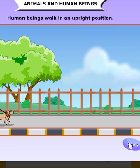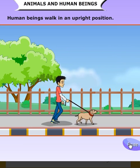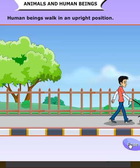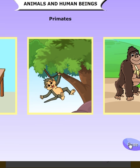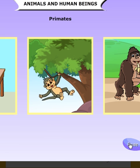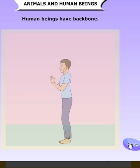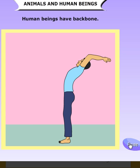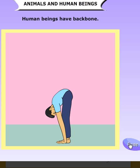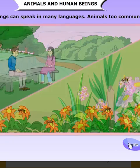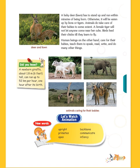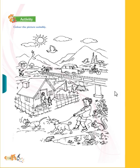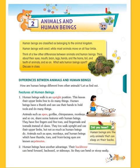Human beings walk in an upright position and do many things with their hands, but animals cannot walk upright. Apes, monkeys, and human beings which have thumbs, toes, and front-facing eyes are known as primates. Using the backbone, human beings can bend forward, backward, and sideways. Human beings can speak many languages, while animals also communicate among themselves.